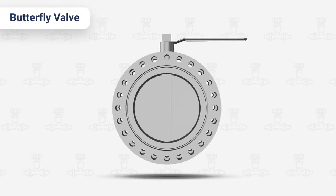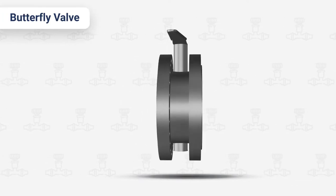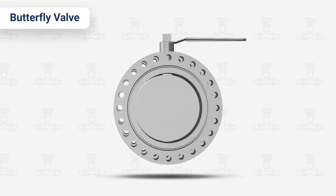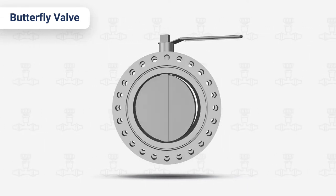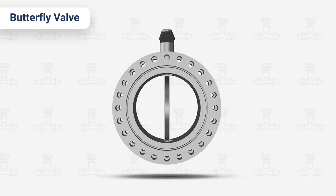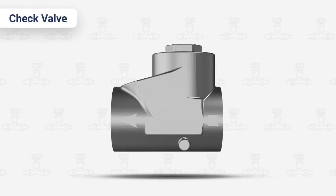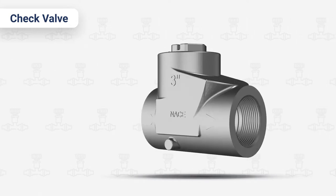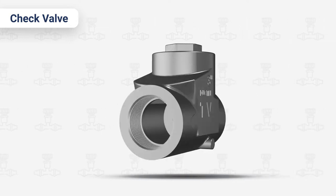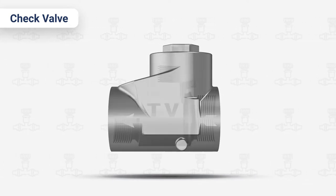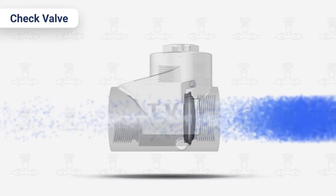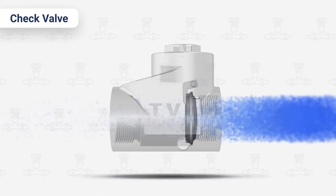Butterfly valve. Using a compact design, the butterfly valve is a quick-acting rotary motion valve ideal for tight spaces. Butterfly valve bodies are offered in many different configurations. Check valve. Used to prevent backflow, these valves are typically self-activated, allowing the valve to automatically open when media passes through the valve in the intended direction and close if flow is reversed.